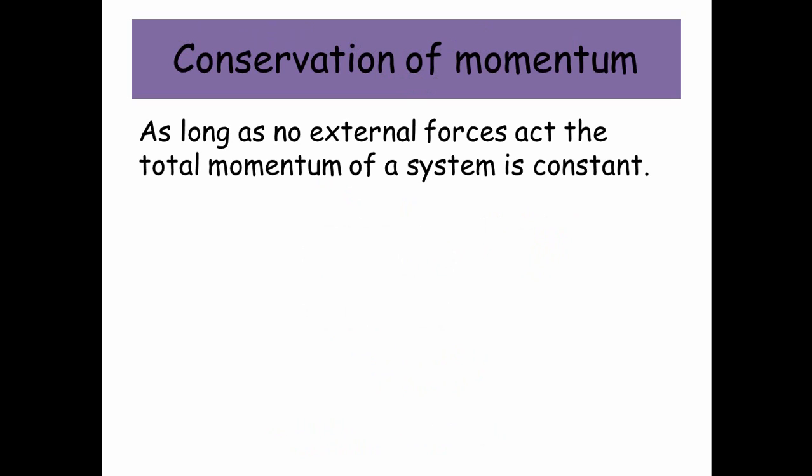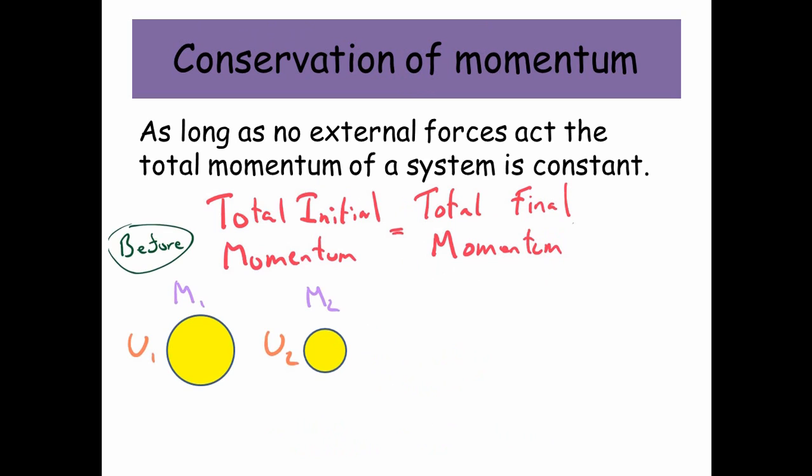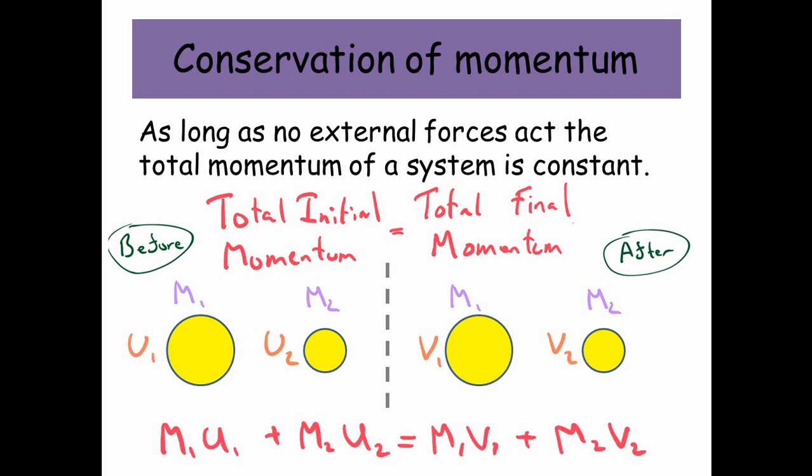Conservation of momentum. As long as no external forces act, the total momentum of a system is constant. So that means the total initial momentum is equal to the total final momentum. So imagine I had a situation where I've got two balls, one with mass 1 and velocity u1, and mass 2 with a velocity u2. And then finally maybe the balls collide or something happens. Well, mass 1 would have a final velocity of v1 and mass 2 would have a final velocity of v2. And we know the total initial momentum is equal to the total final momentum. So we can say m1u1 plus m2u2 is equal to m1v1 plus m2v2.